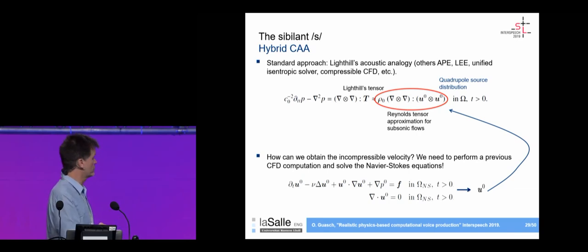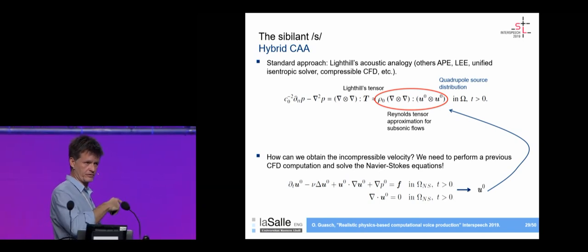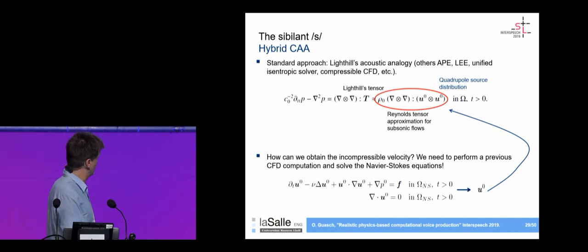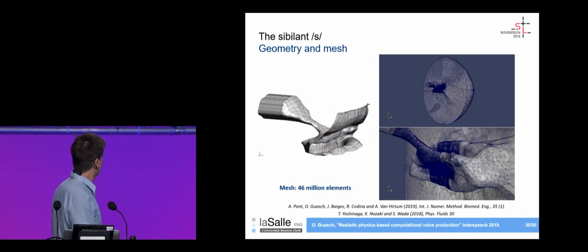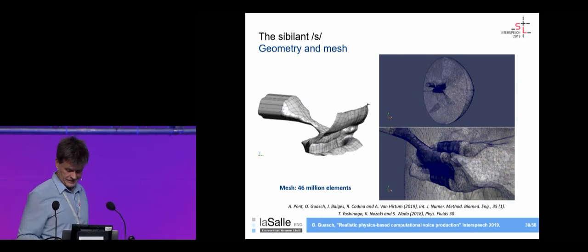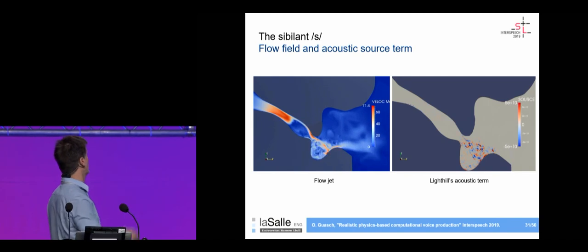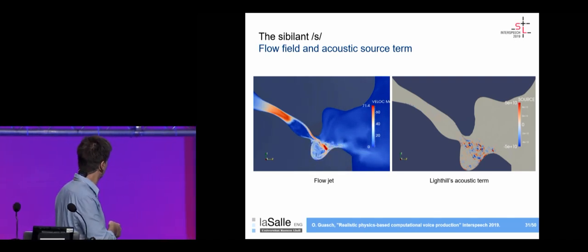The result is the wave equation with an acoustic source term to compute. This source term involves a double divergence, representing a quadrupole. The problem is that computing it requires solving the nonlinear Navier-Stokes equations, which is extremely costly. For example, to generate an /s/ up to 2000 Hz requires a supercomputer simulation using 46 million elements — a very large simulation.